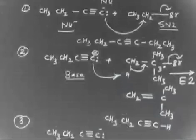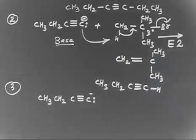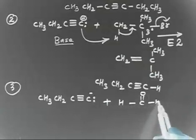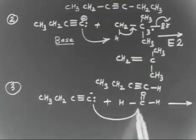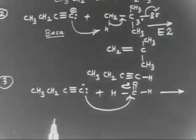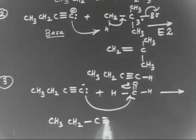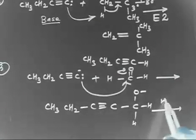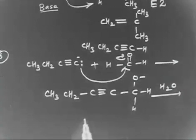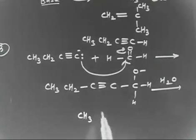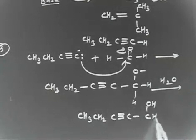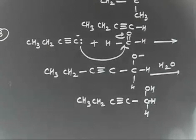For the third reaction, CH3CH2C≡C minus reacts with formaldehyde (HCHO). The acetylide attacks the carbonyl carbon of formaldehyde, opening it to give CH3CH2C≡C–CH2–O minus. Then, treating with H2O in the next step, the O minus takes H plus from water to finally form the alcohol: CH3CH2C≡C–CH2OH. This is a primary alcohol.